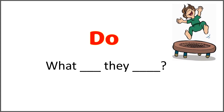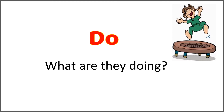The given word is 'do.' And the sentence is 'what blank they blank?' Use the correct form of 'do' with 'are' to complete the sentence. What are they doing?